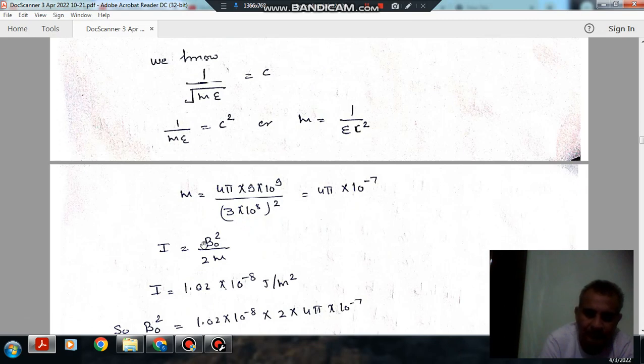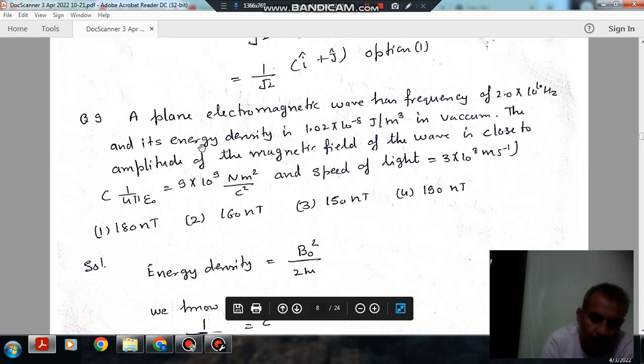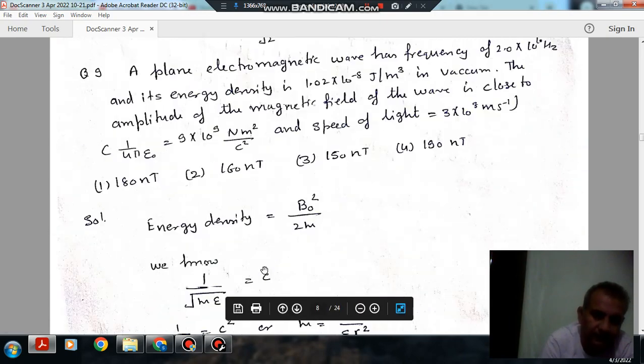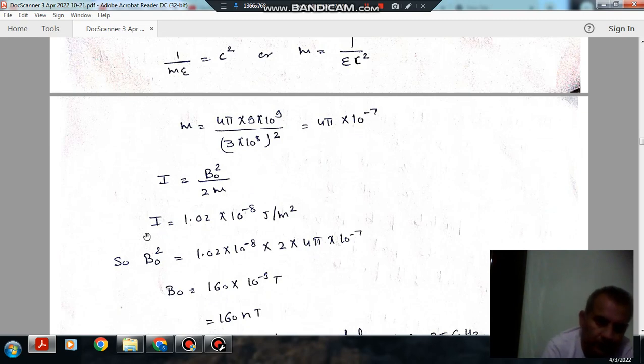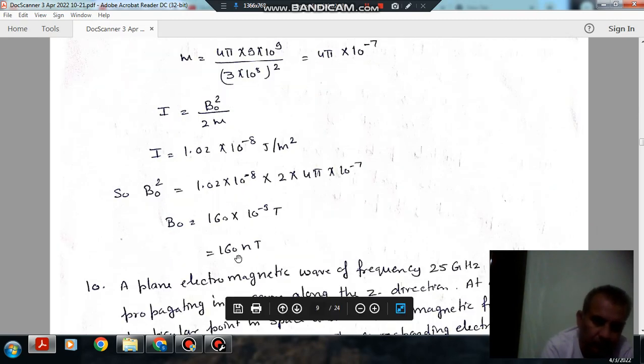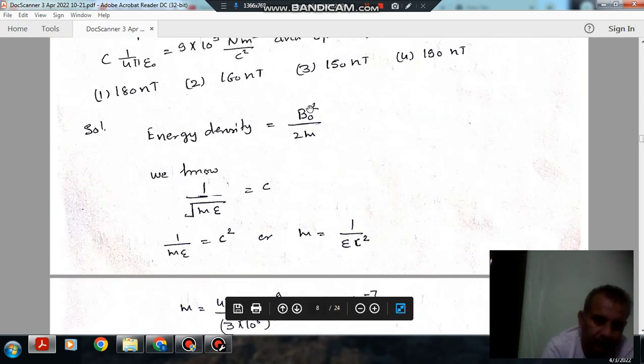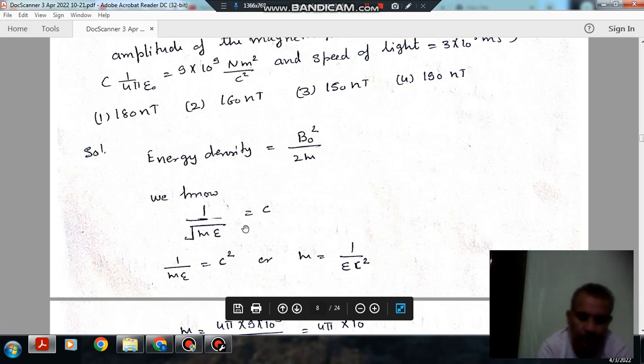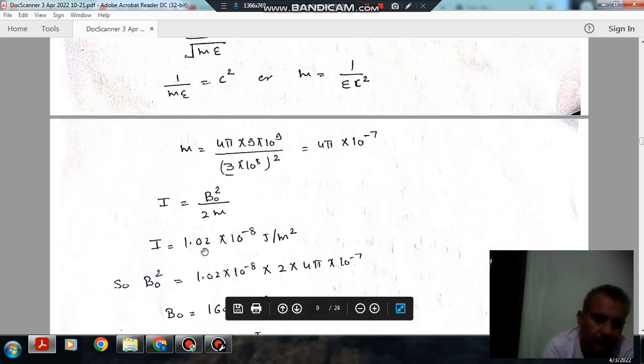So from this relation we can find out mu as 4 pi times 10^-7. As the energy density of magnetic field is B0 square by 2 mu, so I is given as 1.02 times 10^-8, mu we have found out, and from this we can find that B0 is 163 nanotesla. So answer is 163 nanotesla.